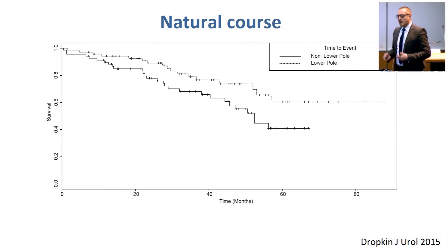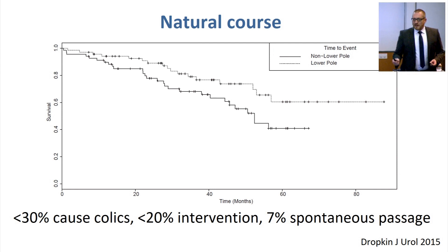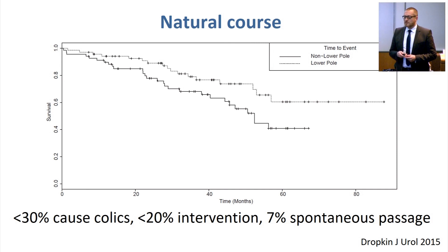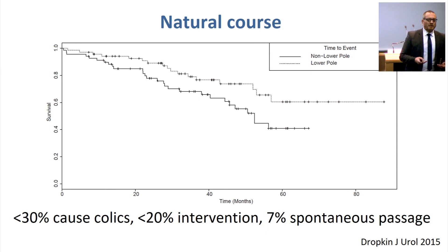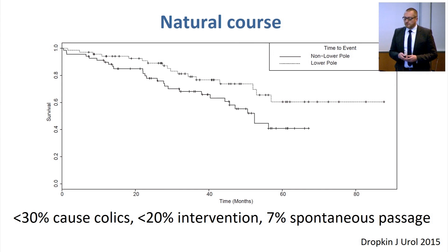Something does happen. If you look at this survival curve — which means the time until the patient has any kind of symptoms, colic, spontaneous passage, or intervention — it decreases. Roughly one-third of your patients will have symptoms within the next five to six years. Up to 20% require intervention. Some will have spontaneous passage. I think that is something that may help the patient decide if he wants observation or, depending on what he does professionally, wants to undergo a preventive procedure.